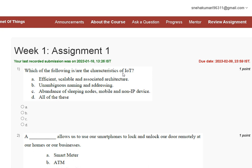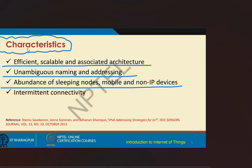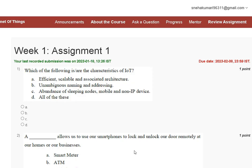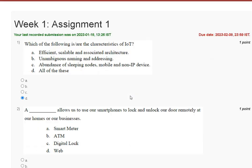The options are: first, efficient scalable and associated architecture; second, unambiguous naming and addressing; third, abundance of sleeping nodes, mobile and non-IP devices; and fourth, all of the above. The characteristics of IoT include all of the above options, so the correct answer to question one is option D, all of the above.